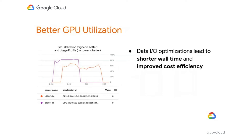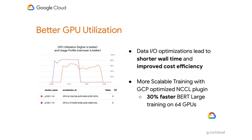This better I/O throughput helps reduce the cost of training. Also, with networking optimizations to NCCL, better performance is achieved when you scale to large clusters of GPUs. For example, when training the BERT large model for NLP problems on a 64-GPU cluster, we see about a 30% speedup with these improvements built in.